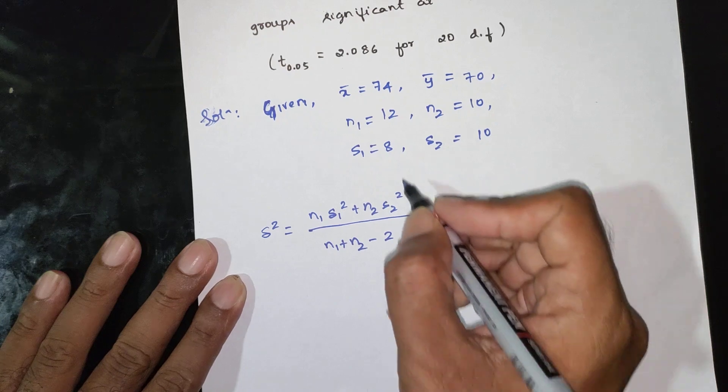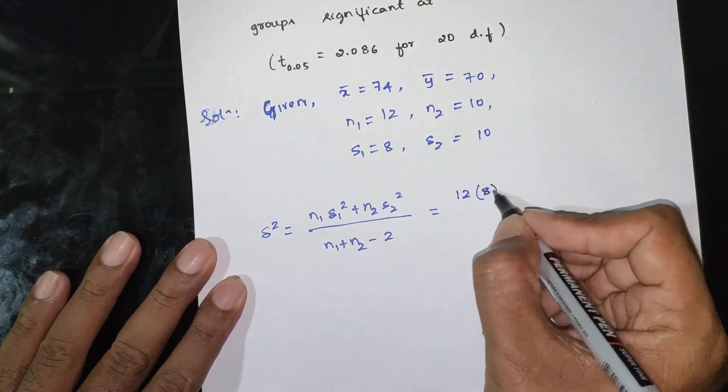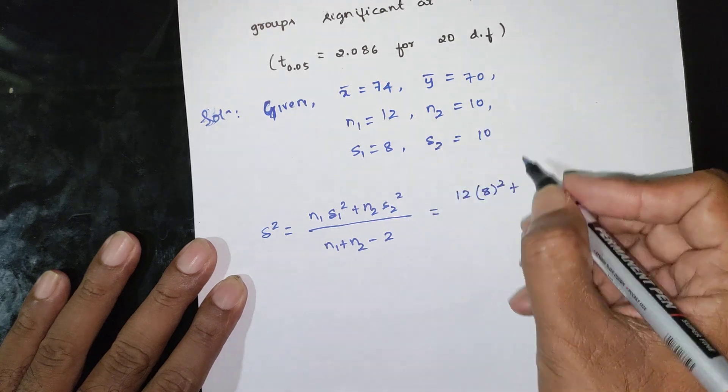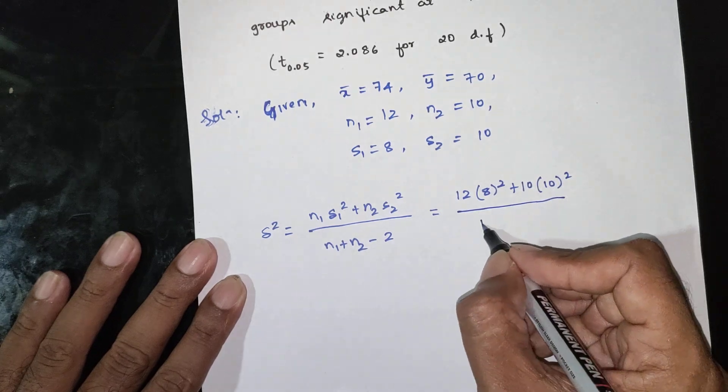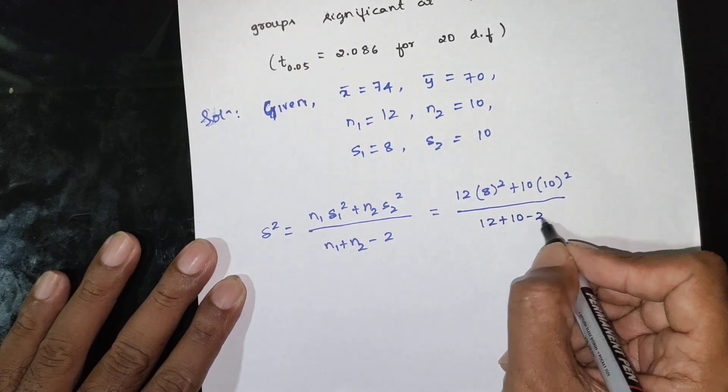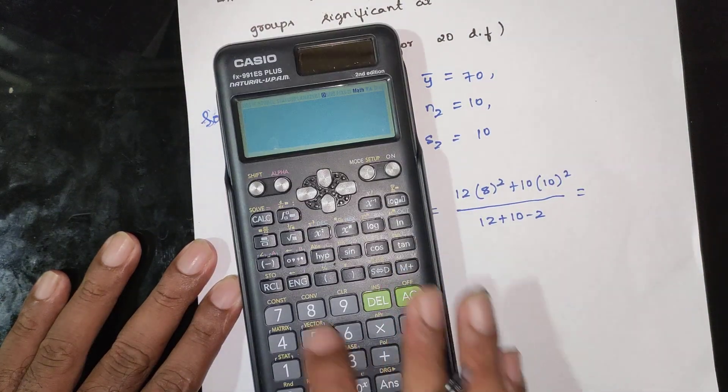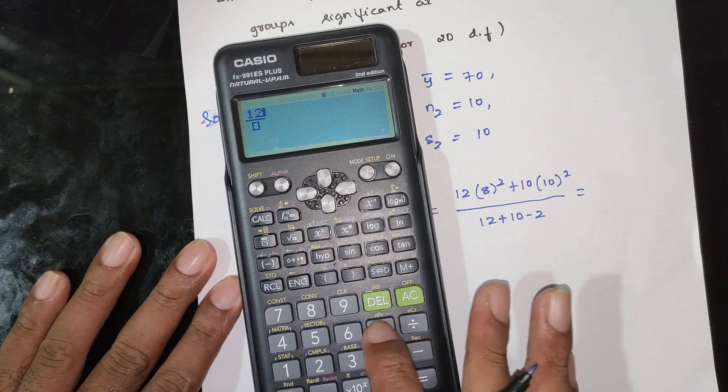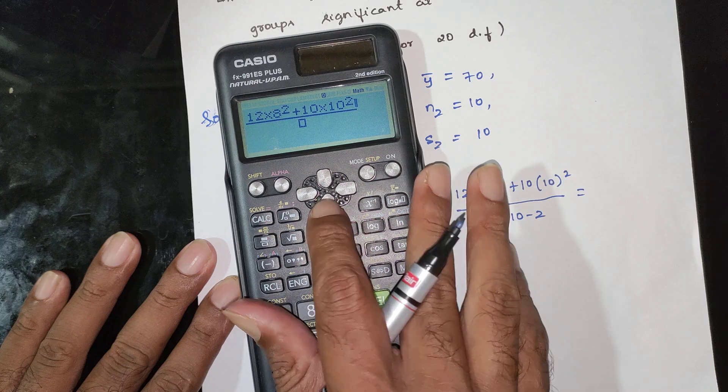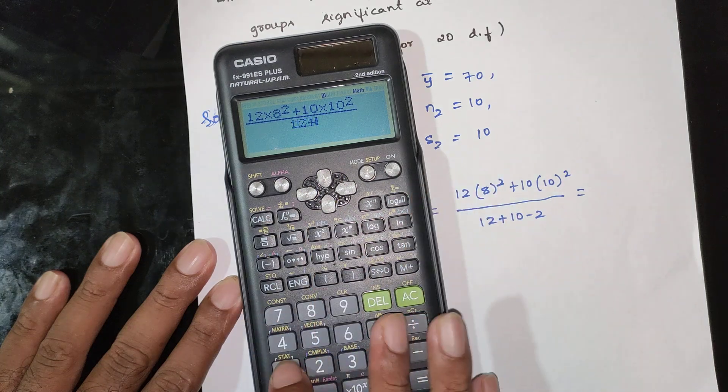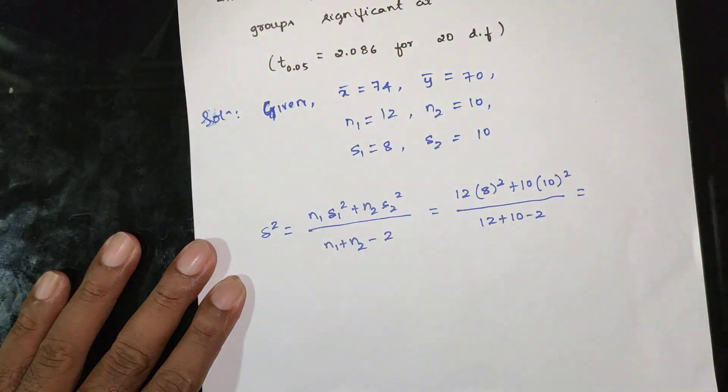s squared equals 12 into 8 squared plus 10 into 10 squared divided by 12 plus 10 minus 2, which equals 88.4.